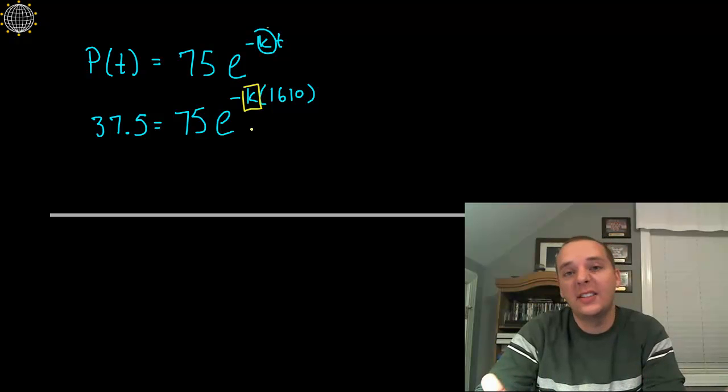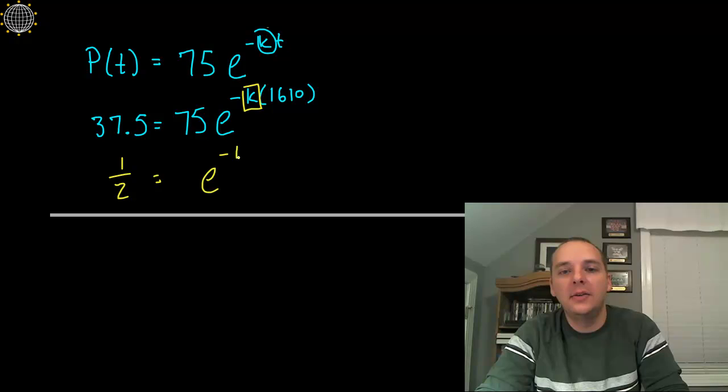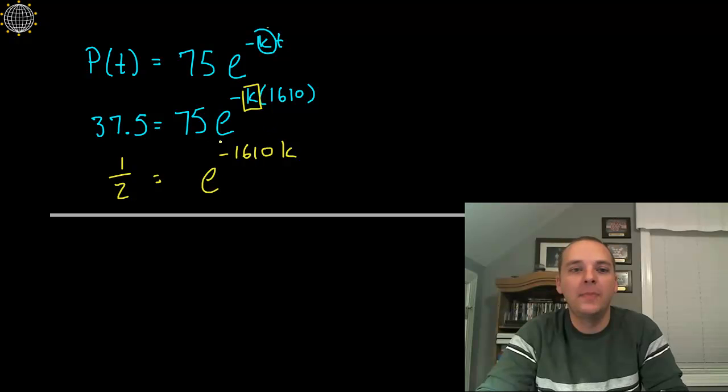A little arithmetic here. Solve for K. Divide both sides by 75. This will give you 1/2. That should be no surprise. It doesn't matter if it's 100 decaying to 50 or 50 decaying to 25 or whatever. When you divide that after the first step, you always get 1/2. That equals E to the negative 1610 K. I just reordered those terms to look a little better.